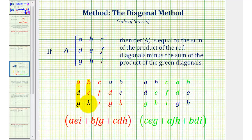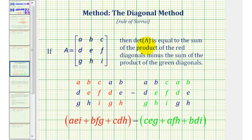The first three columns are the same as the original matrix. The fourth column is the same as the first column, and the fifth column is the same as the second column. So once we have the three by five arrangement of elements, we're ready to use the diagonal method. The determinant of matrix A is equal to the sum of the product of the red diagonals minus the sum of the product of the green diagonals. So the determinant will be equal to the sum of the product of these three diagonals minus the sum of the product of these three diagonals.